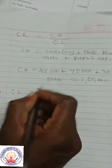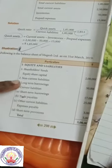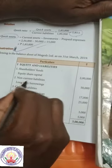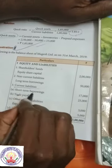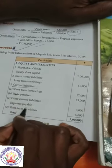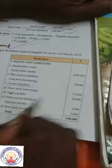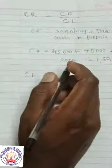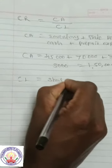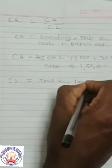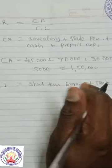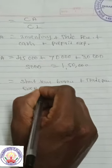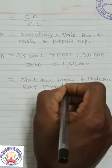Now for current liabilities. Shareholder fund and non-current liabilities are not considered — only current liabilities. These are: Short-term borrowing, Trade payables, Other current liabilities — Expense payable, and Short-term provisions. Current liabilities equals Short-term borrowing plus Trade payables plus Expense payable plus Short-term provisions.